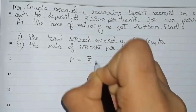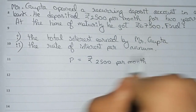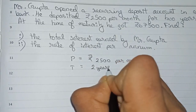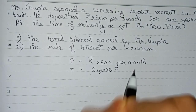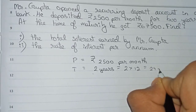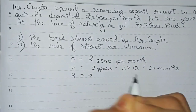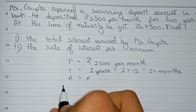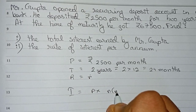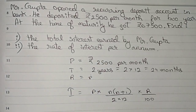So principal is equal to rupees 2500 per month. Time is equal to two years. As we are writing the principal per month, time will also be converted into months. So two years means 2 into 12, that is 24 months. Rate of interest we take as r because it is unknown. And interest is equal to principal into n(n+1) by 2 into 12, into r by 100. This is our formula.